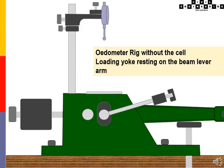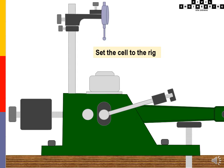Odometer rig without the cell. Loading yoke resting on the beam lever arm. Transfer the cell to the rig.